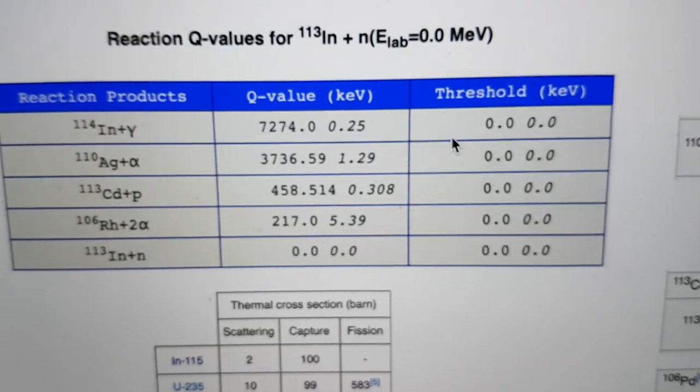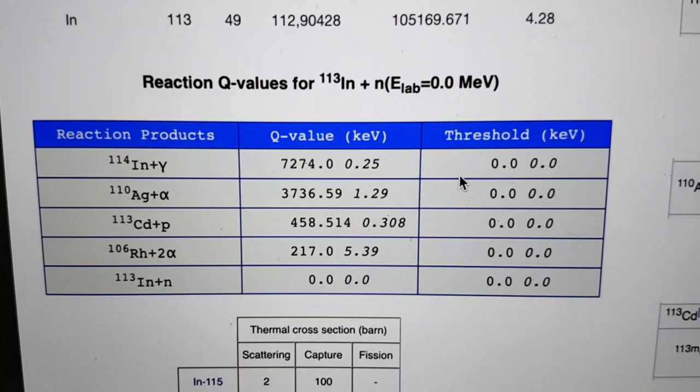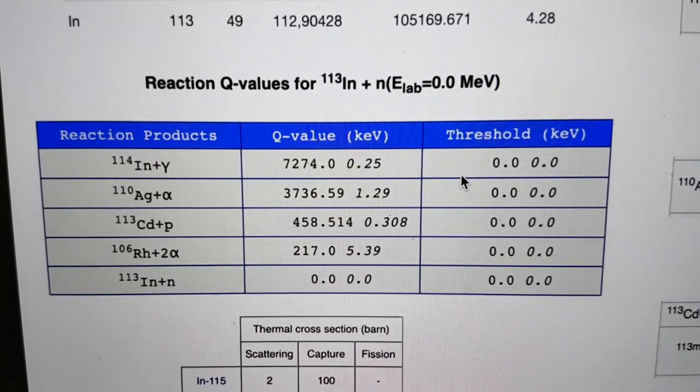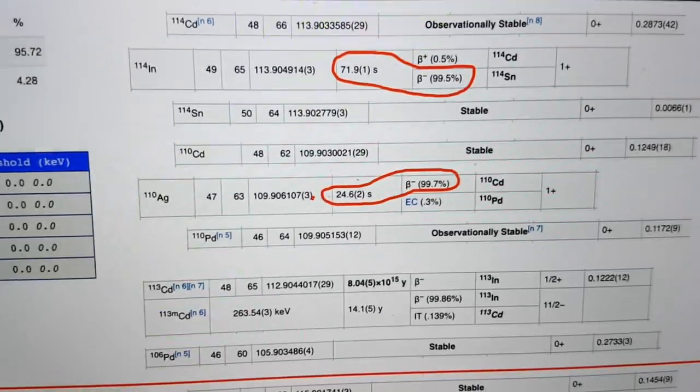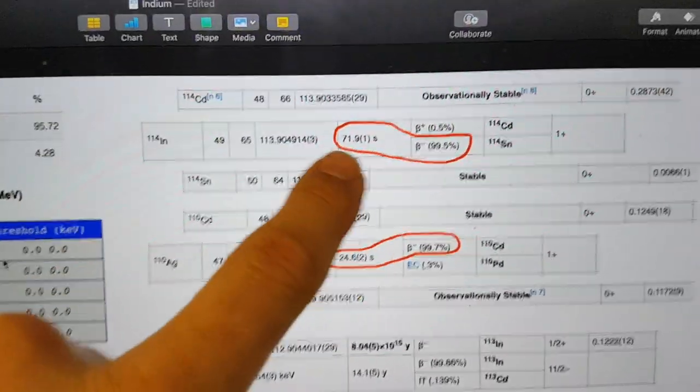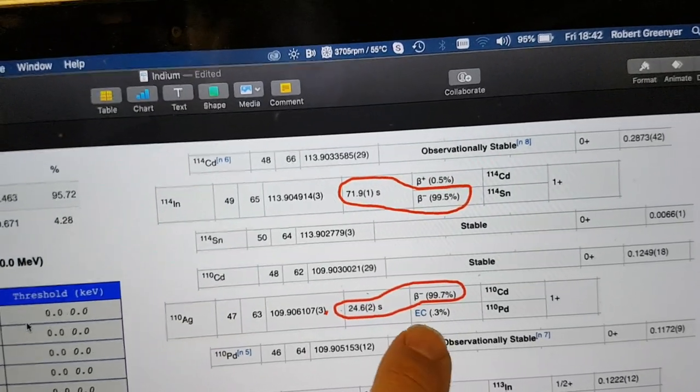So this is the NNDC National Nuclear Data Centre Q-Value Calculator for indium-113, and these are the outcomes. However, we're not so interested in those. A lot of them are very fast: 71.9, 24.6 and so forth.